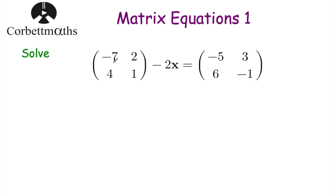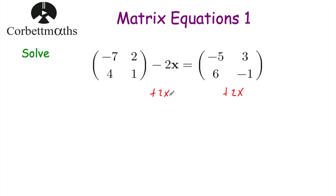Okay let's have a look at our next example. So we've got: solve the equation [-7, 2, 4, 1] subtract 2x is equal to [-5, 3, 6, -1]. Now to solve this I'm going to add 2x to both sides of the equation to begin with, so that it's a positive 2x rather than a negative 2x.